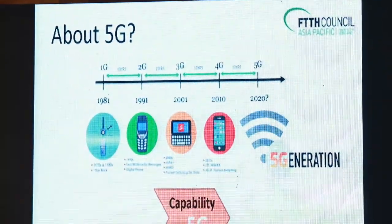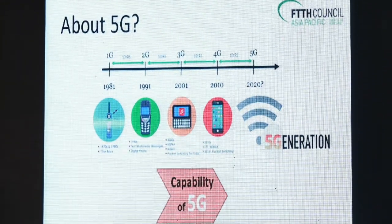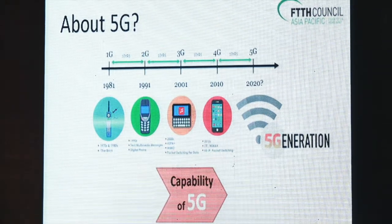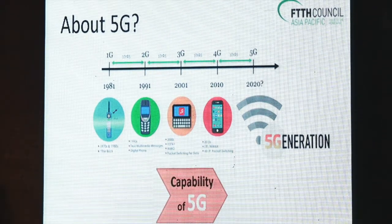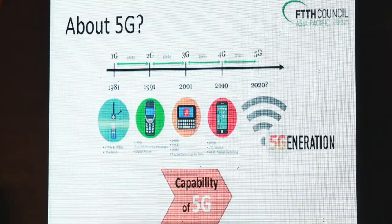What capability does 5G give us? We saw 1G, 2G, 3G, and 4G. For 5G, first of all it gives us a data rate of 10 to 20 gigabits per second. Then it gives you connection density. We talked about IoT, and all those IoT-enabled services require lots and lots of devices — we're talking about a million devices within a square kilometer.